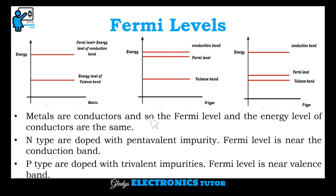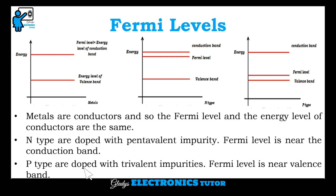These are the Fermi levels of metals, n-type semiconductor, and p-type semiconductor. Since metals are conductors, the Fermi level and the energy level of the conduction band are the same. In n-type, it is doped with pentavalent impurity, so it has more free electrons — the majority carriers are electrons — so the Fermi level is near the conduction band. In p-type, doped with trivalent impurity, the majority carriers are holes, so the Fermi level is near the valence band.